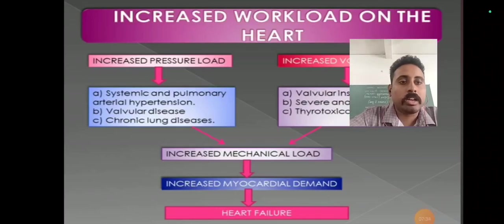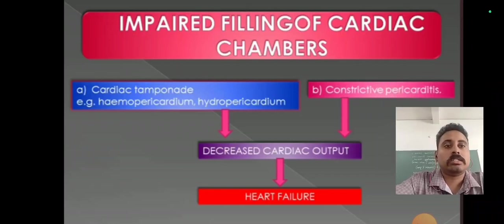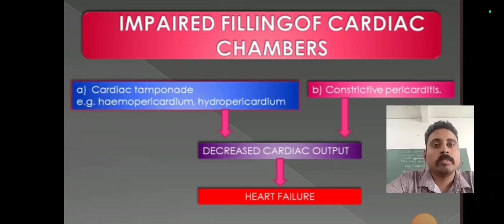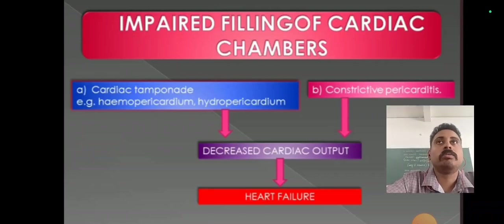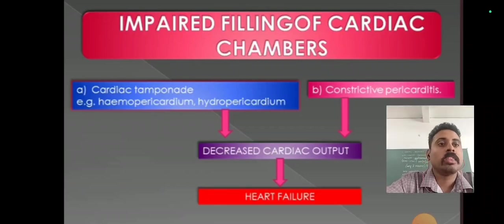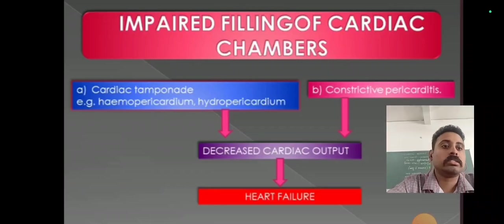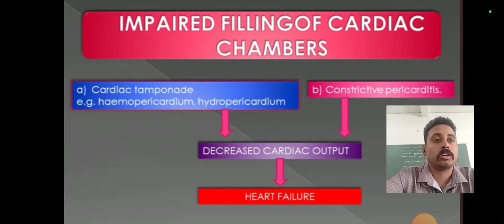The third etiology is impaired filling of the cardiac chamber, which has two types: cardiac tamponade and constrictive pericarditis. Cardiac tamponade involves filling of fluid — examples include hemopericardium, which means the pericardium fills with blood, and hydropericardium, which means water fills the pericardium. The heart has three layers: endocardium, myocardium, and pericardium. Constrictive pericarditis means constriction of the pericardium, leading to increased cardiac output impairment and heart failure. This is one of the etiologies of CHF.